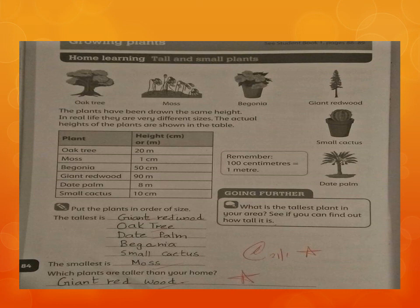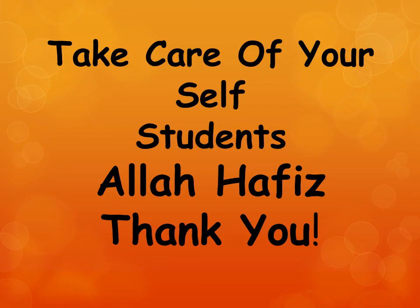The tallest is giant redwood and the smallest is moss. Which plants are taller than your home? Obviously our home is not 90 metres tall, so the giant redwood is the tallest compared to our homes. What is the tallest plant in your area? See if you can find out how tall it is. Note down the names of these trees. This was all for today's work — do your work nicely. Take care of yourselves, students. Allah Hafiz, thank you so much, see you in the next class.